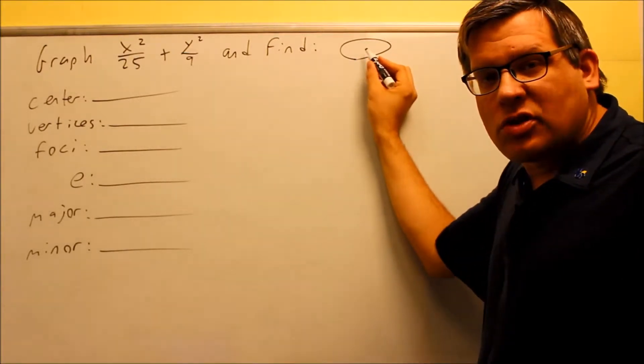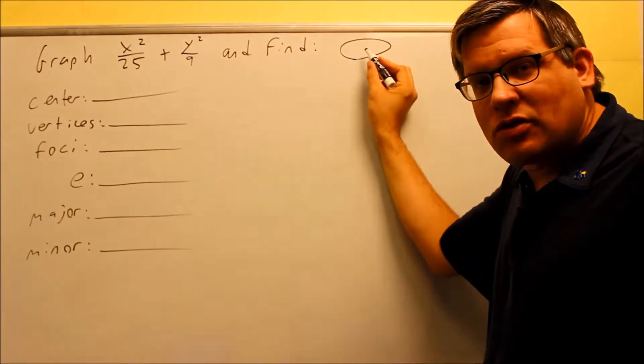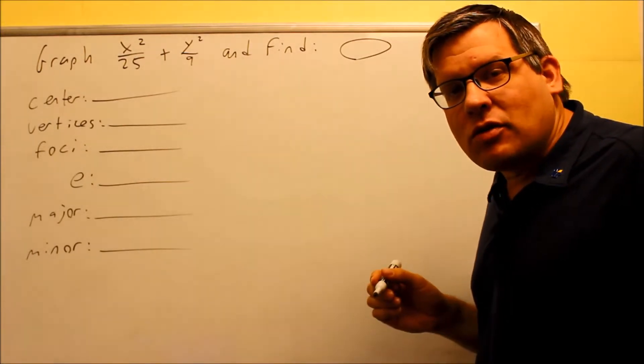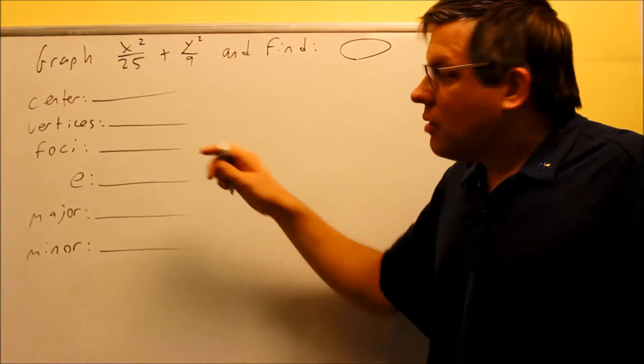And this is important to know if it opens up or down or left or right because that's the direction we have to go with our a and b values. So what are a and b?